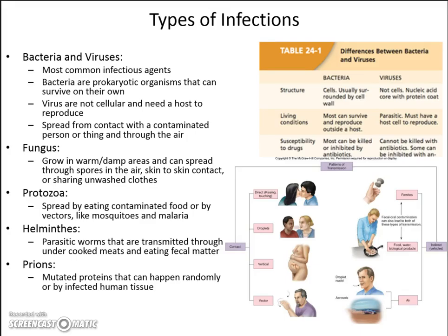Fungus — you probably think of mushrooms as a fungus, and that's a good example. However, fungi can cause infections as well. Whenever a fungus is airborne and gets into your lungs, you can get some sort of infection. Or if you touch it, it can grow on your skin and create a fungal infection. Fungus needs a warm, damp area and can spread through spores that get in the air or by touching the fungus. If you share someone's clothes that haven't been washed or are warm and damp, you can also get a fungus.